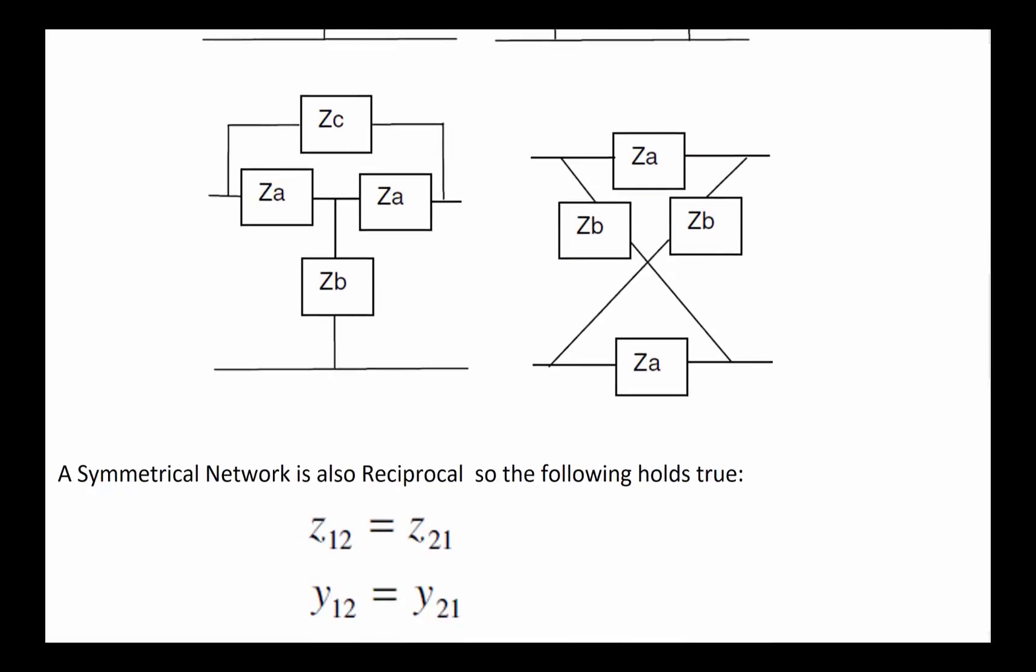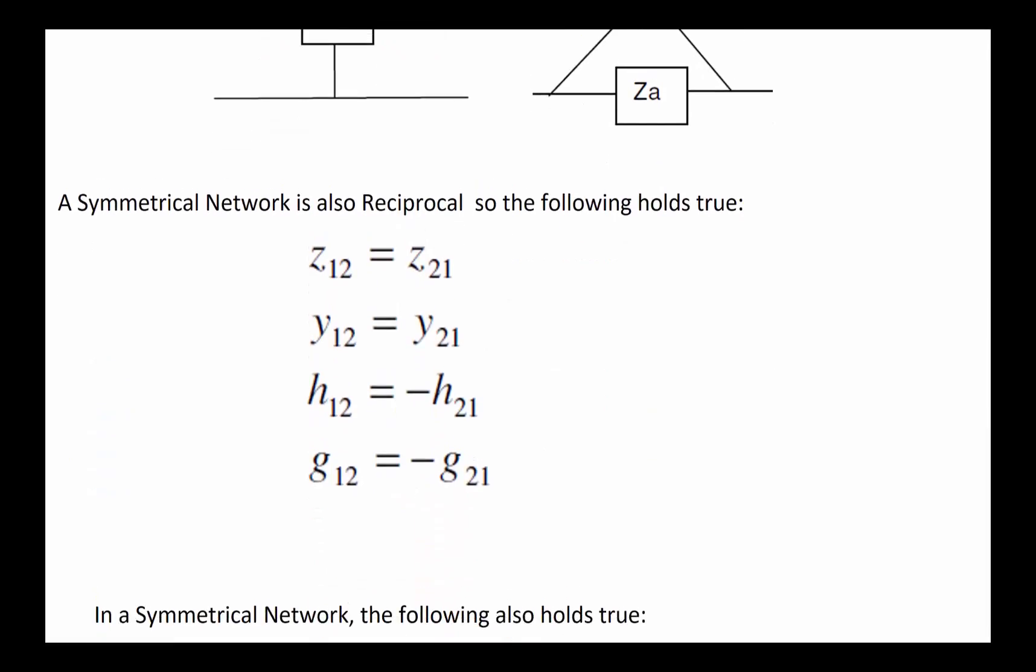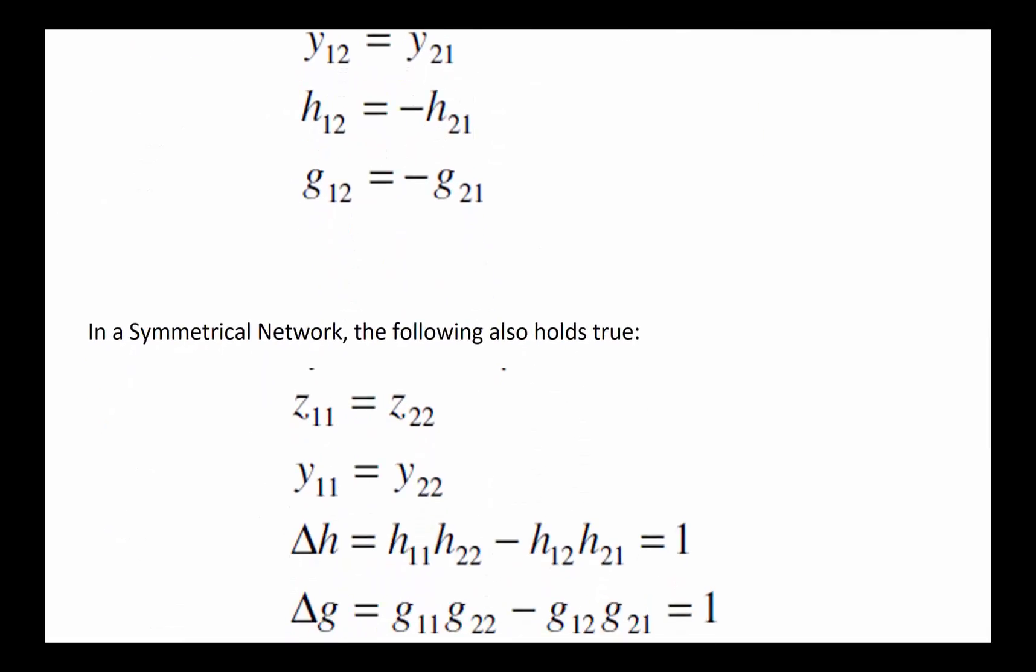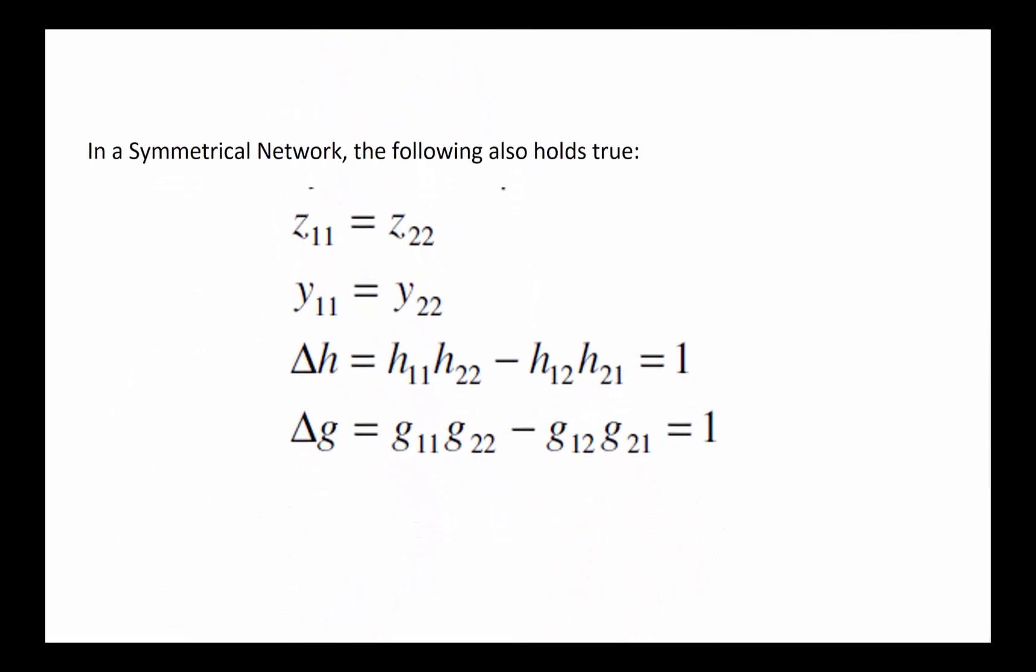This basically means that not only is a symmetric network also a reciprocal network, so you get all the previous relationships that exist as Z12 equals Z21, Y12 equals Y21, etc. In addition to that, in a symmetric network you also get the following relationships.